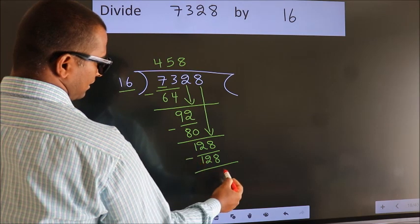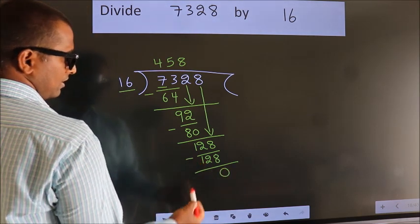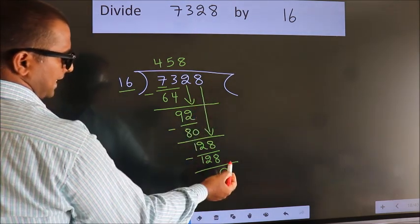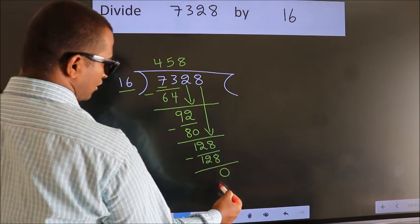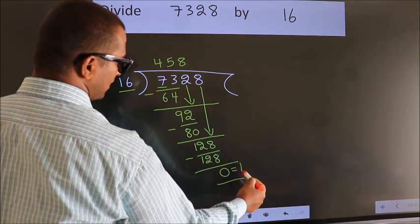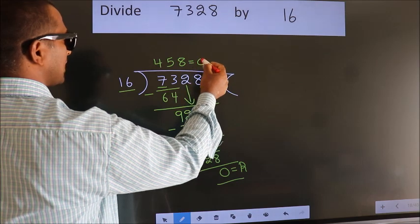Now we subtract. We get 0. No more numbers to bring it down. So we stop here. This is our remainder. This is our quotient.